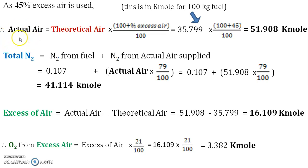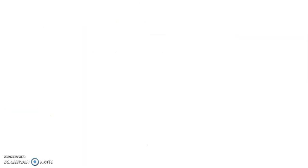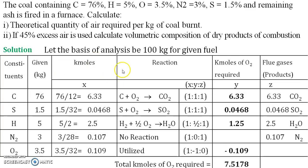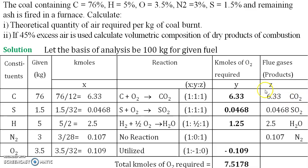Using the actual air, we now find the other quantities — specifically, the products of combustion. These have already been calculated in the very first table, where along with the oxygen we also determined the combustion products: carbon dioxide, SO2, and water. These are the products obtained by oxidation during combustion.